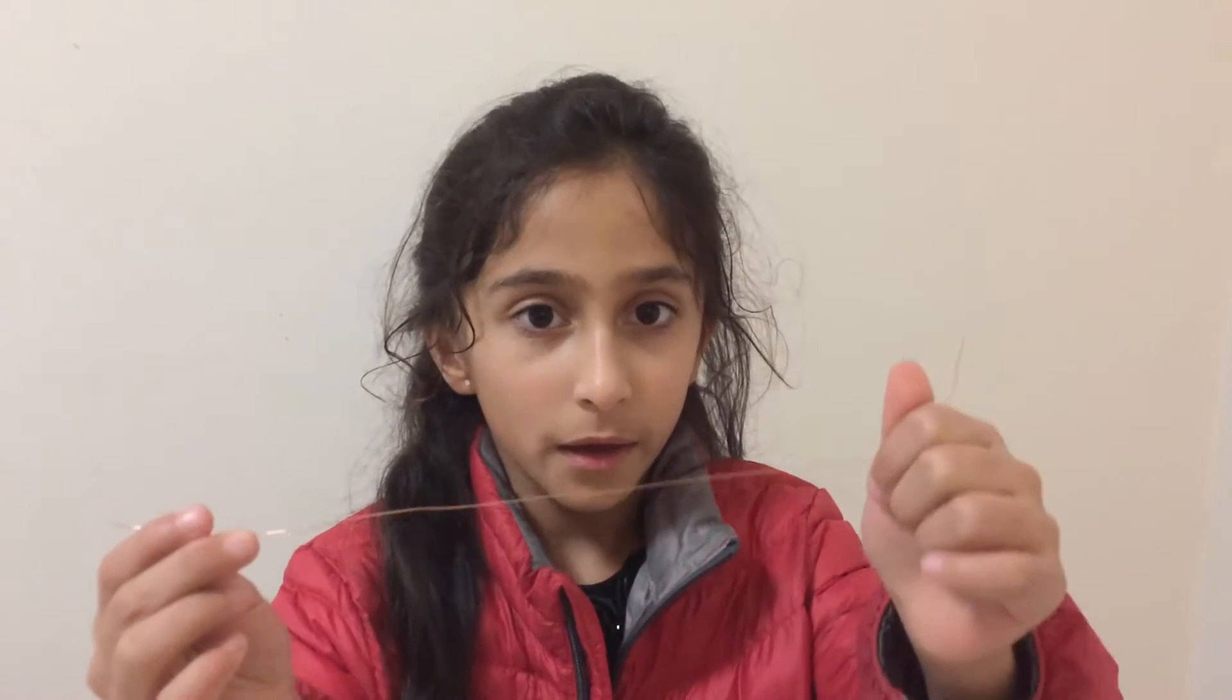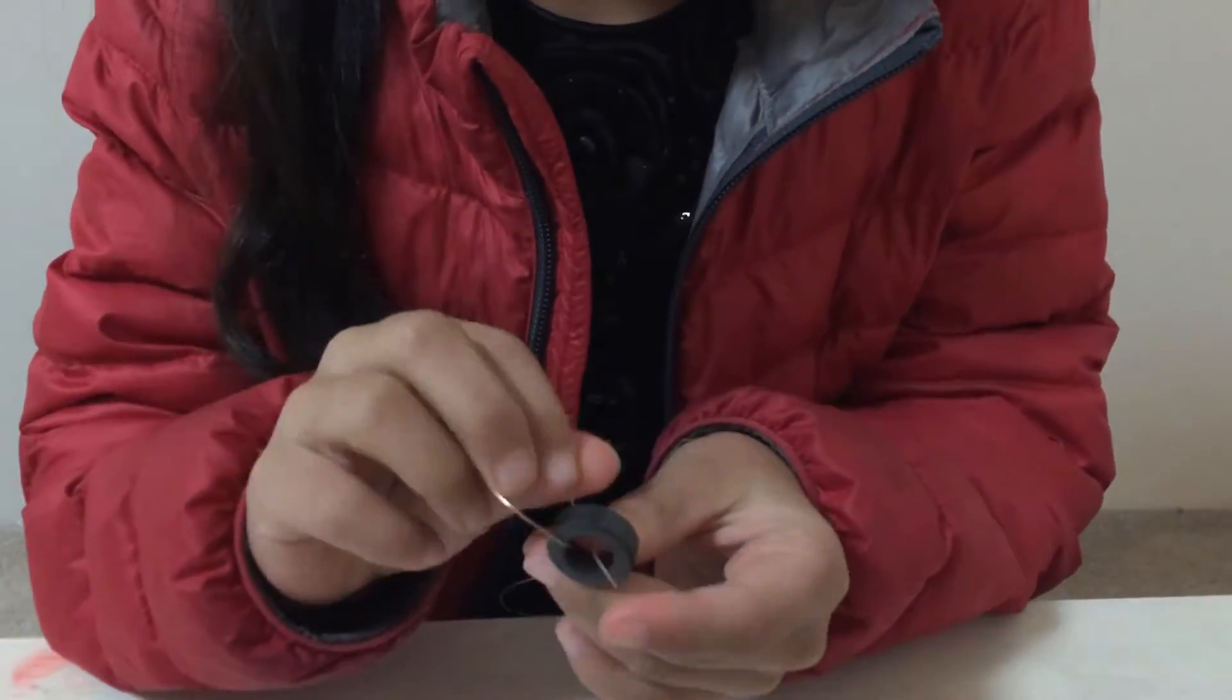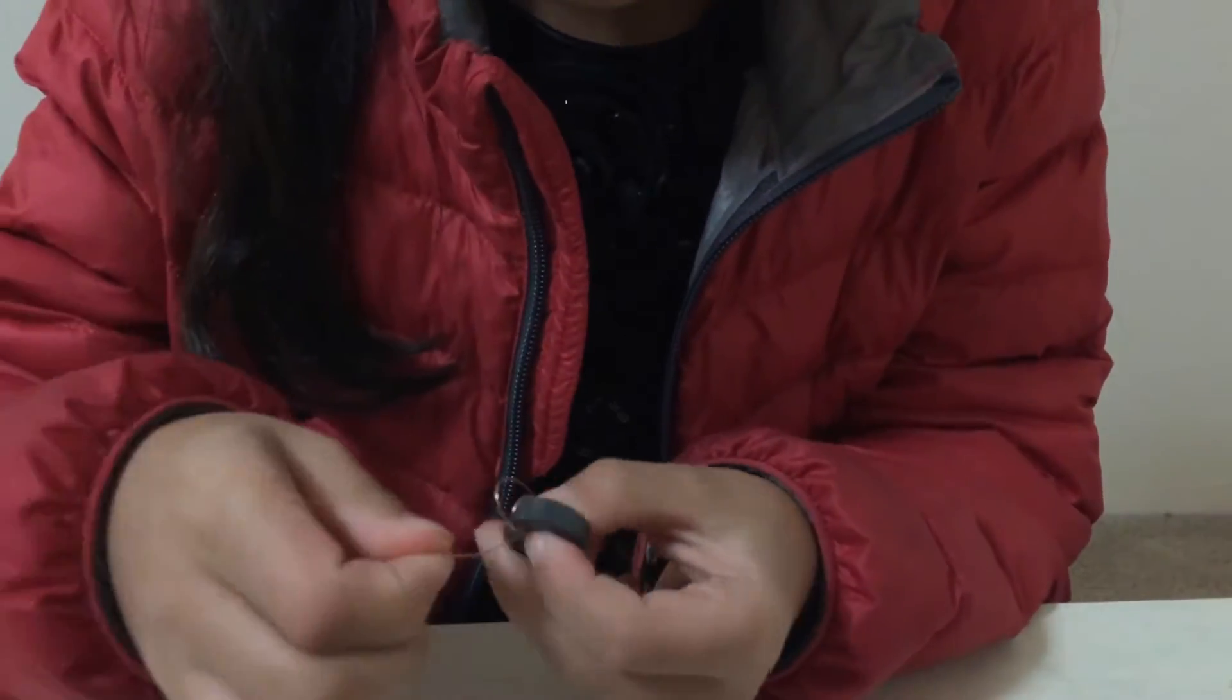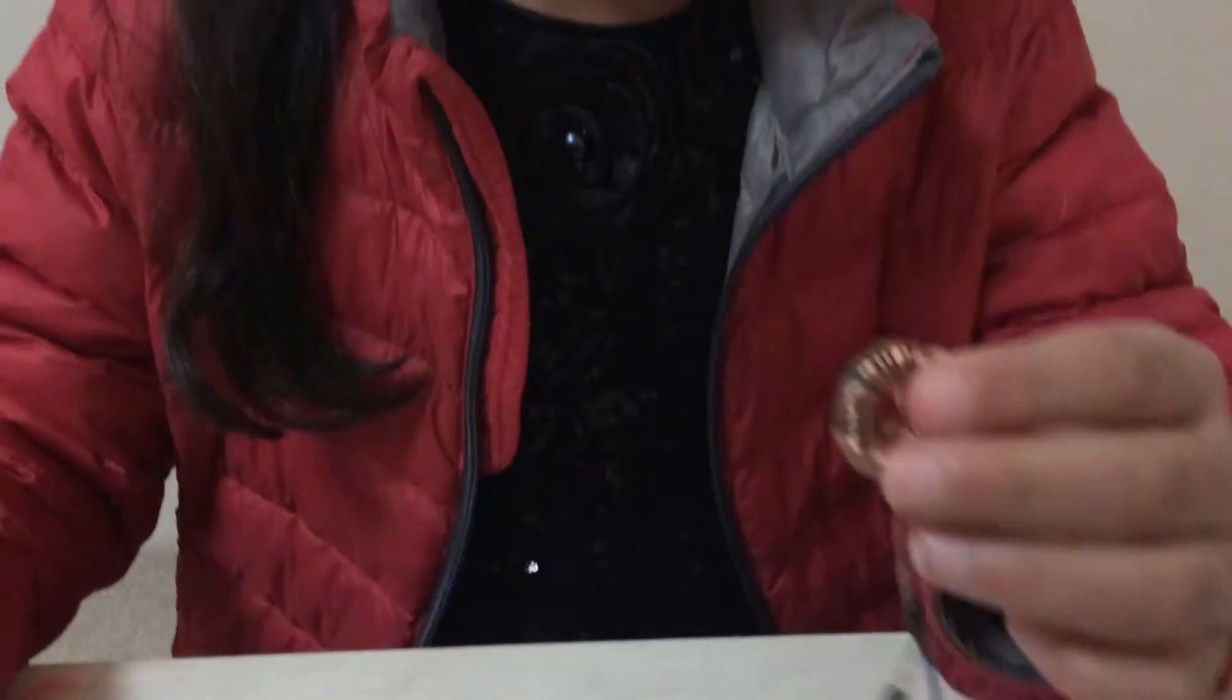To make an inductor, I will wind this coated wire around this donut shaped ferrite core. This is how the completed inductor looks like.